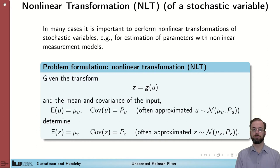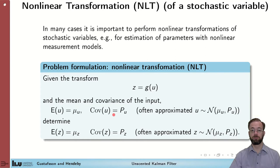Before we start the derivations of this more general Kalman filter for nonlinear models, let's recall nonlinear transformations of stochastic variables. The problem is to find the stochastic properties of z, which is a function of u — also a stochastic variable — with known mean and covariance. We are given the function g, the mean and covariance of u, and look for the mean and covariance of z. This will be used when we derive the general Kalman filter equations.